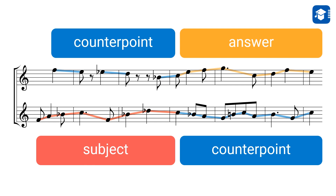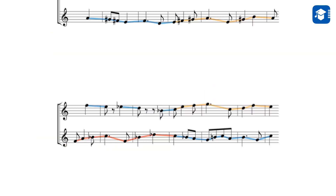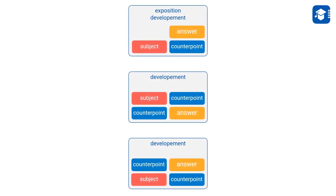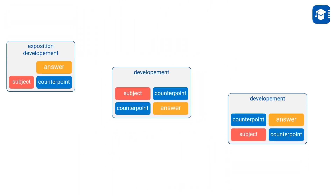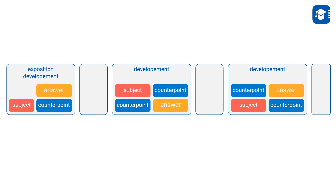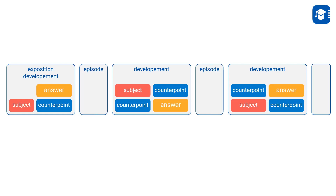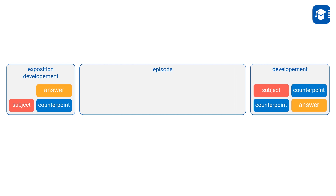The next question is: how do we move from the end of one development section to the beginning of the next? We write a transition section that links them together, called an episode. This may sound boring at first, however it can be quite exciting, as the episodes of a fugue offer the most room for creativity. The most important task here is to change the key so that the next entry of the subject is harmonically prepared.